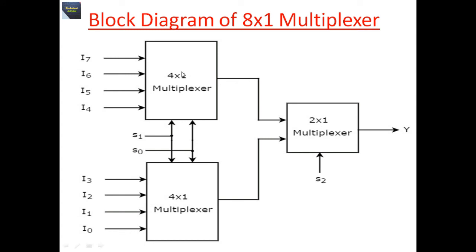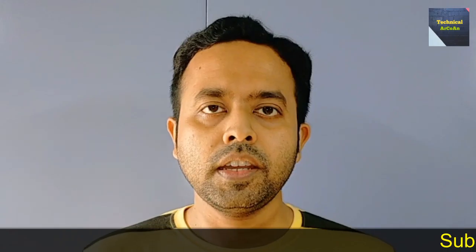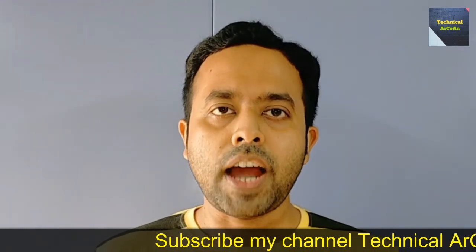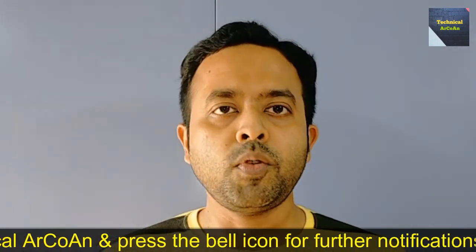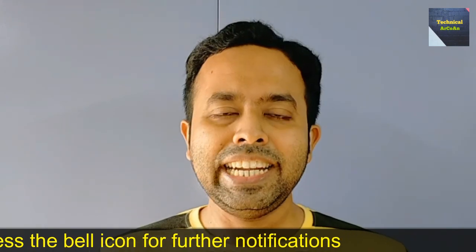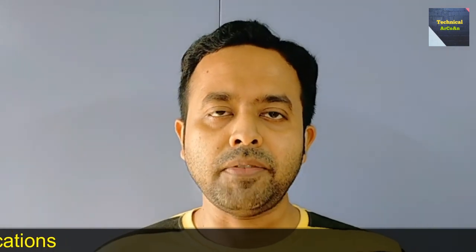In the first stage there are two 4x1 multiplexers, and in the second stage there is one 2x1 multiplexer. The total circuit diagram forms an 8x1 multiplexer. I hope you have understood today's topic. For more videos, keep watching my channel Technical Archway. Thank you and bye bye.